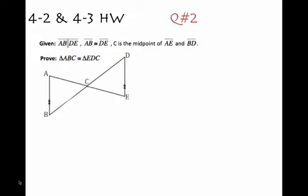And you have to prove that the two triangles are congruent. So my first piece of advice would be to mark it up. You can see that AB and DE are already marked as being parallel. But I would mark it up.